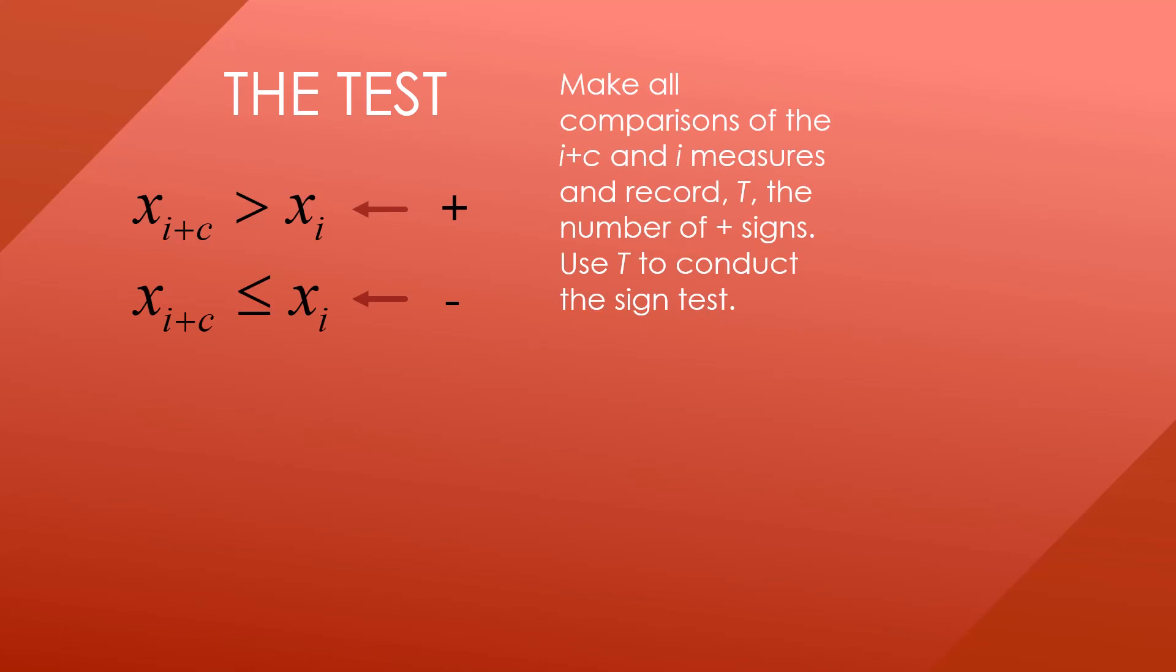Now let's see how to do the test. We are going to start with i equals 1 and compare X sub i plus C to X sub i. If X sub i plus C is greater than X sub i, we will give that a plus sign. If X sub i plus C is not greater than X sub i, we will give it a minus sign. We'll make all comparisons of the i plus C and i measures and then we'll record T, the number of plus signs, and we will use T to conduct the sign test.